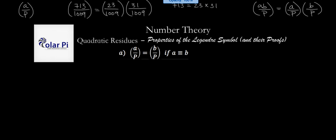The first one is pretty obvious, which says that if A is congruent to B mod P, then A over P is equal to B over P. And this requires no proof.